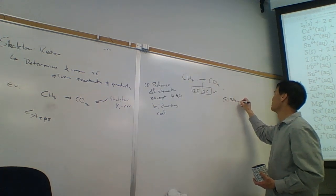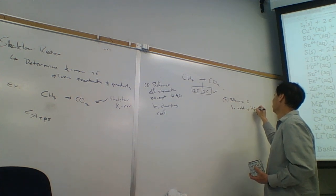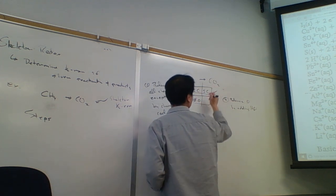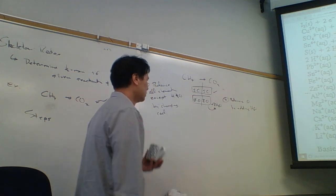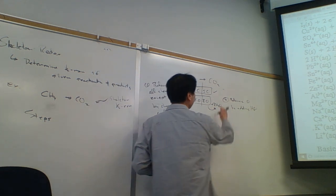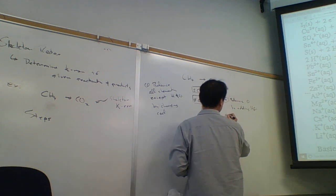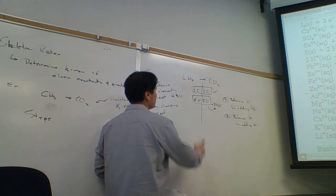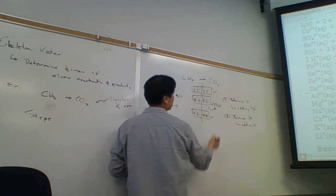Step 2: balance oxygen by adding H2O. On the left I have zero oxygens; on the right I have two oxygens. To balance, I add two H2O. Step 3: balance the hydrogens by adding H+. On the left I have four H's; on the right I have two times two, which is four H's. So the hydrogens are already balanced; I don't need to add anything.